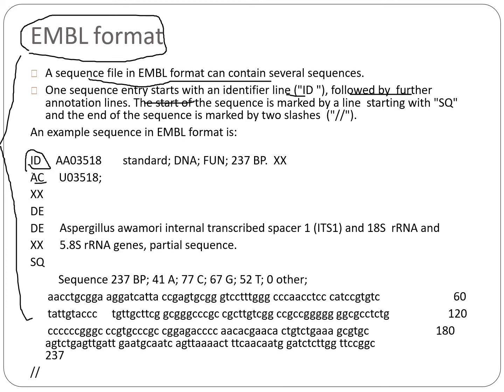In the EMBL format, annotation lines include identifiers such as AC, DE, and others. The start of the sequence data is marked by a line beginning with 'SQ', and the entry ends with two forward slashes '//'.